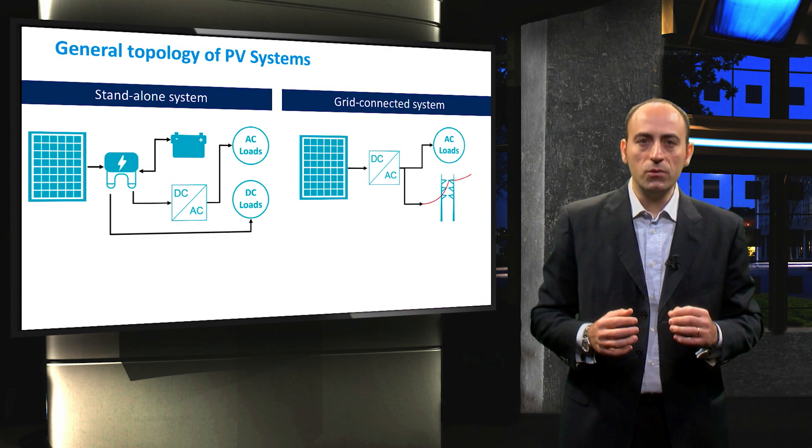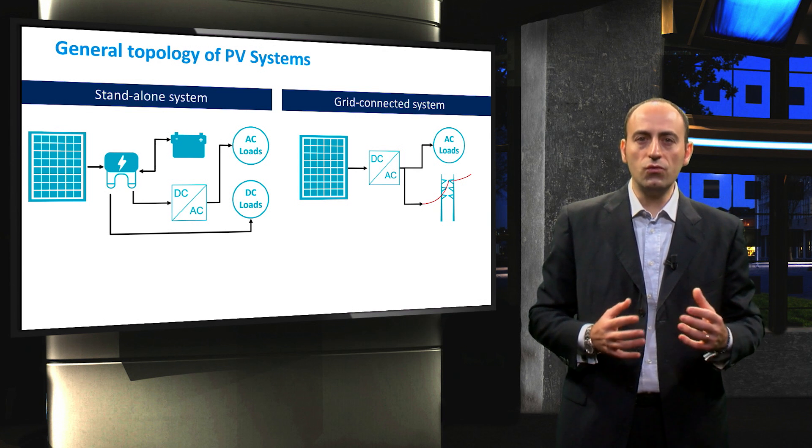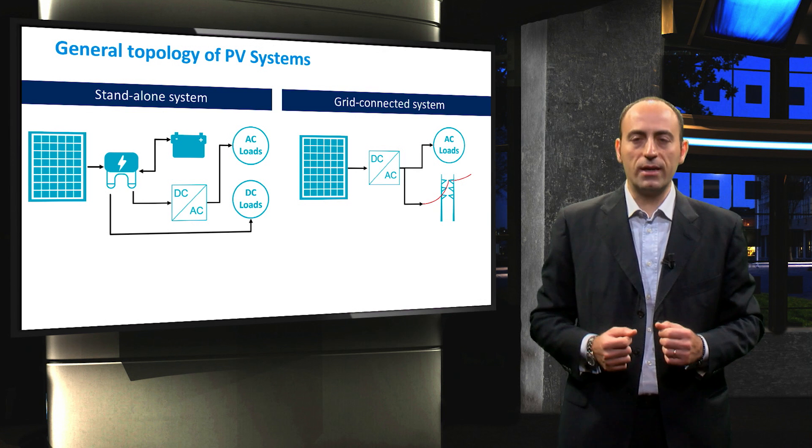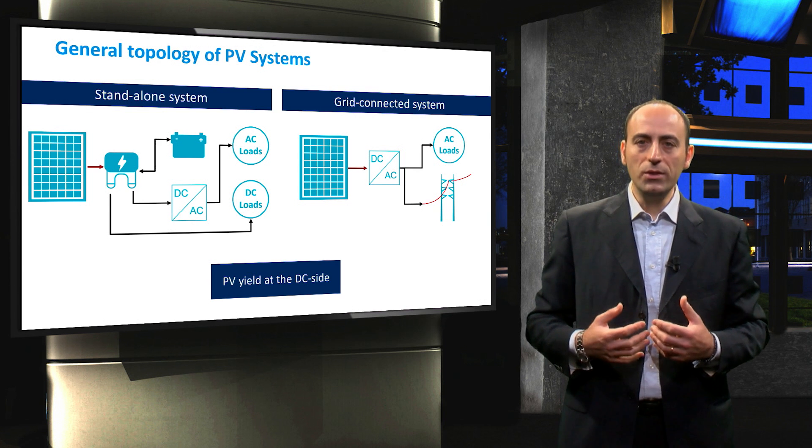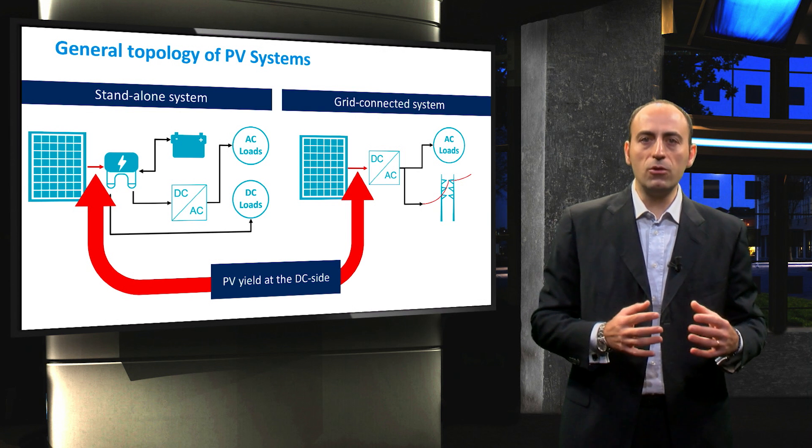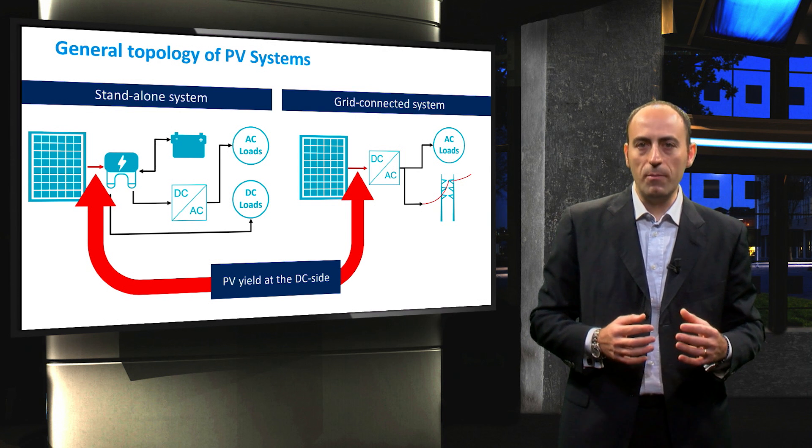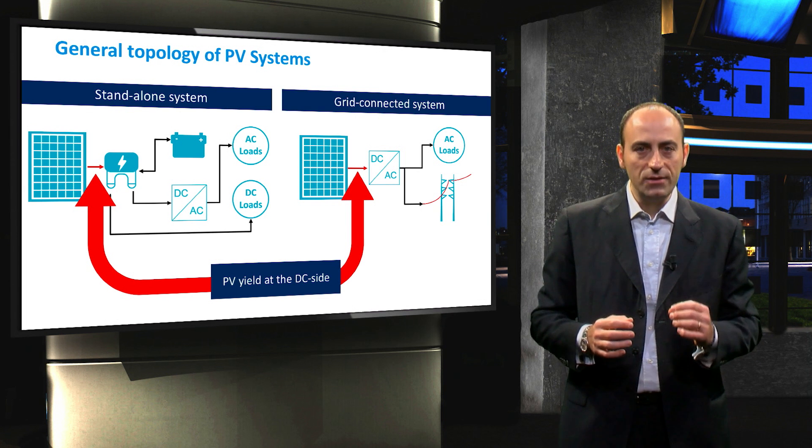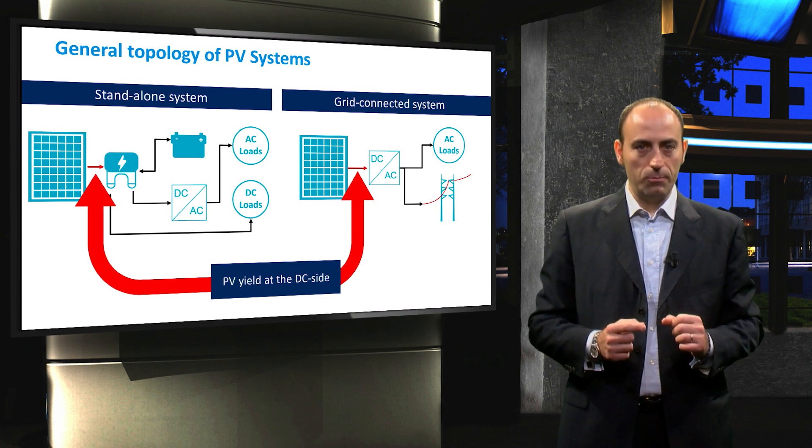But first, let's go back to these figures that represent the two types of PV systems studied: stand-alone and grid-connected PV systems. When we talk about PV module performance, we refer only to the output values right after the PV panels, thus neglecting the balance of the system. Let's look at the electrical parameters in these highlighted points.